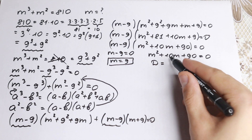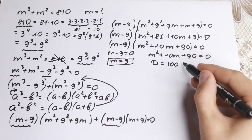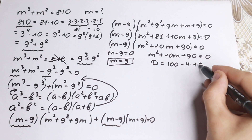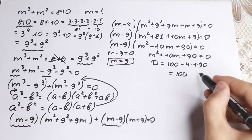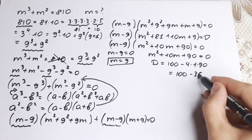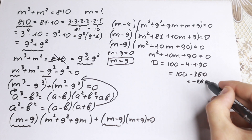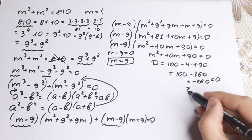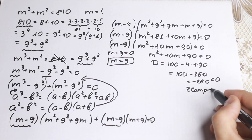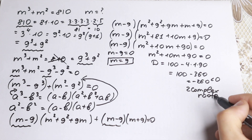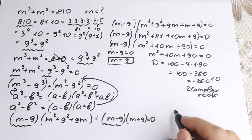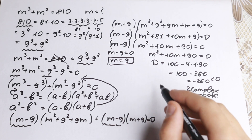The discriminant is b² − 4ac = 100 − 4(1)(90) = 100 − 360 = −260. Since the discriminant is negative (less than zero), the quadratic gives us two complex roots — no real roots. So only the first factor gives us a real solution.